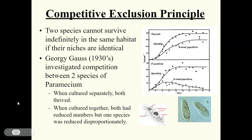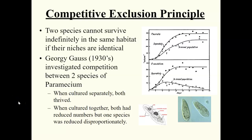The competitive exclusion principle describes how two species cannot survive indefinitely together if they have identical niches. In the 1930s, Georgie Gause investigated competition between two different species of Paramecium — unicellular protists that live in pond water. When he cultured them separately, both thrived. But when put together, both experienced population declines. One declined much more drastically, illustrating the negative/negative effect where one is out-competed by the other.